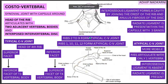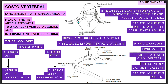Moving on to the costovertebral joint — this is a synovial joint. Looking at the ribcage from behind, where the rib meets the vertebral body is the costovertebral joint. At the same area, slightly behind, the transverse process of the same vertebral body articulates with the rib — that is the costotransverse joint, which we'll cover shortly. It is a synovial joint covered by a capsule.